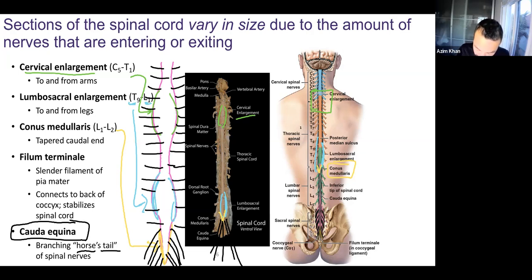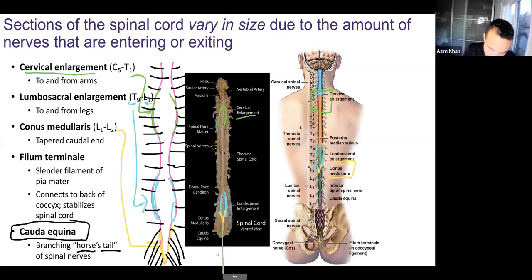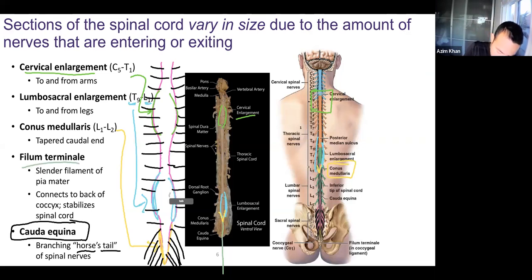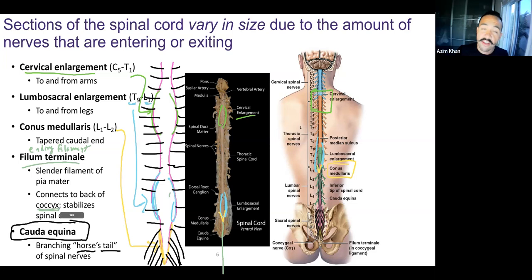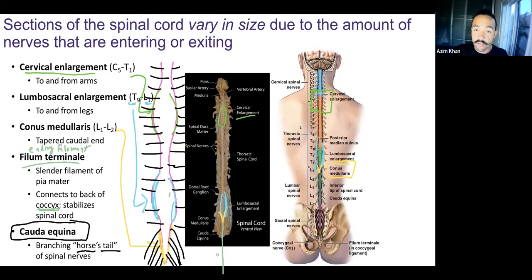At the tail end — the conus medullaris — you'll notice a very thin filament. This is the filum terminale, which literally means ending filament. It's a slender filament of pia mater: the pia mater covers the spinal cord, then fuses together and forms a very thin line that connects down to the coccyx. It's there to stabilize the spinal cord and hold it in place.